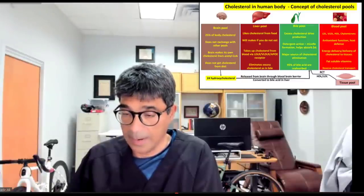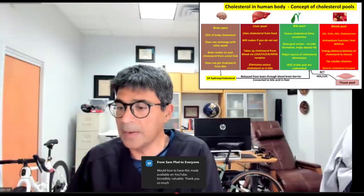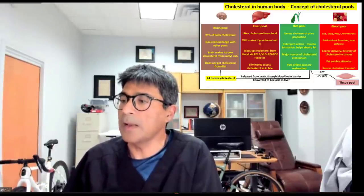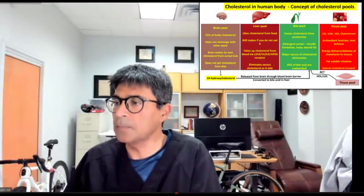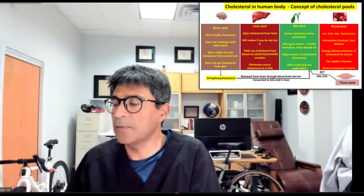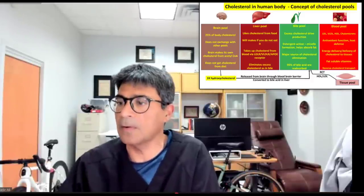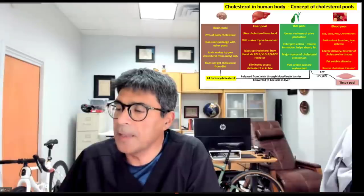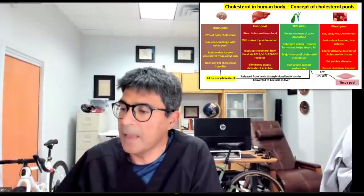The bile pool is responsible for eliminating excess cholesterol and for absorbing fat and fat-soluble vitamins. The body does not like to waste it — 95% of bile salts made are reabsorbed and only about 5% is eliminated. When people think about cholesterol, they are really thinking about the blood pool — the different lipoproteins: LDL, VLDL, HDL, and chylomicrons. All carry the same cholesterol; there is no difference in the cholesterol molecule between LDL and HDL. These molecules have antioxidant function, defend against bacteria and viruses, carry energy and fat-soluble vitamins to tissues.